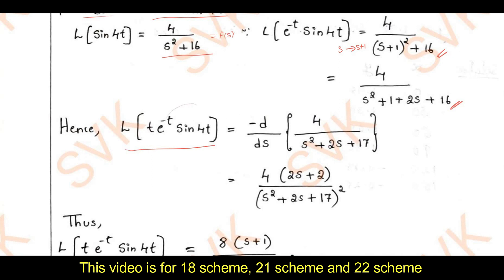We differentiate F(s) with respect to s and multiply by −1 — that is the derivative property. The derivative gives 1/(s² + 2s + 17)² multiplied by the derivative of the denominator, which is (2s + 2). This is the required solution for the first part.